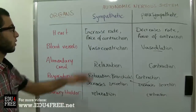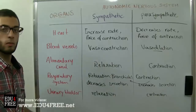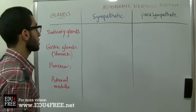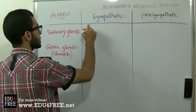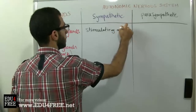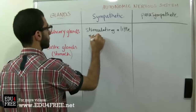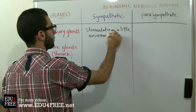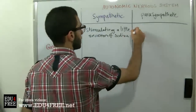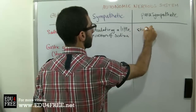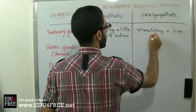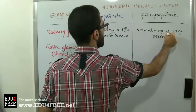Now we will look at the effects on some glands. First, the Salivary Glands. The effect of the Sympathetic Nervous System is stimulating a little secretion of saliva, while the Parasympathetic Nervous System stimulates a large secretion of saliva — because, of course, it is the opposite.